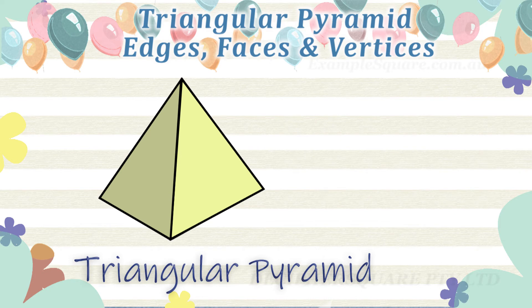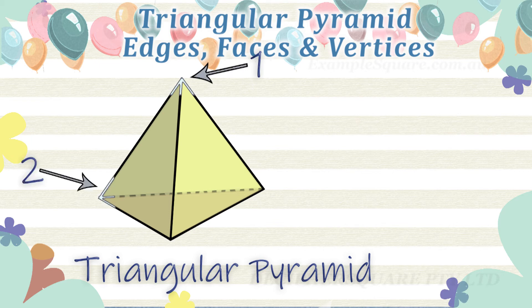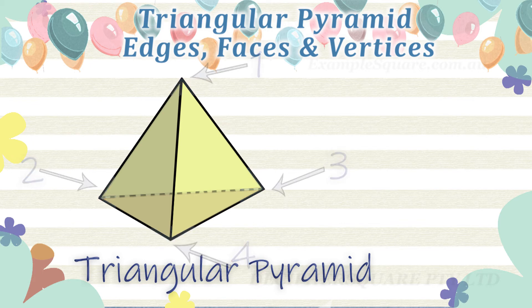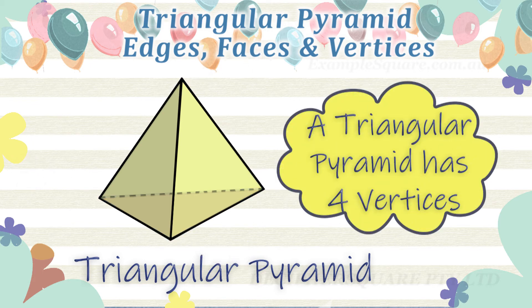How many vertices does a triangular pyramid have? A triangular pyramid has four vertices.